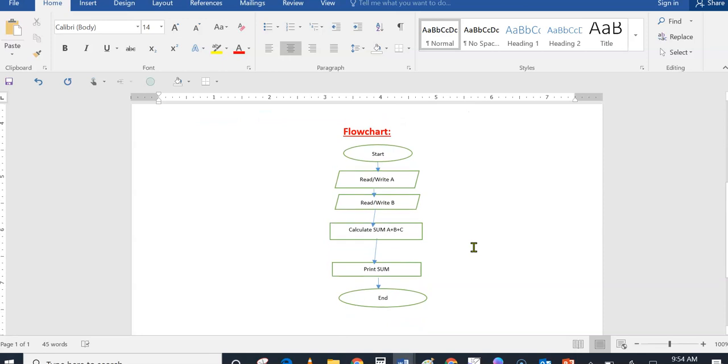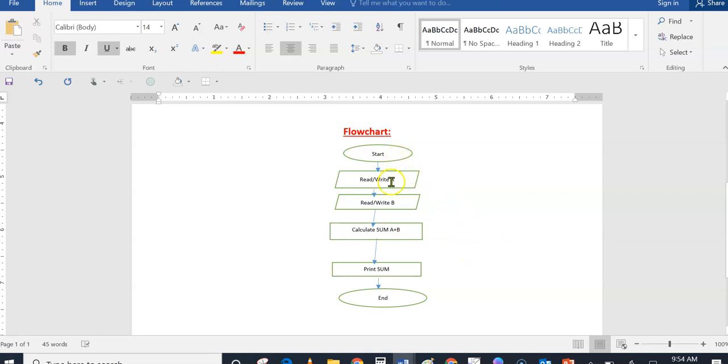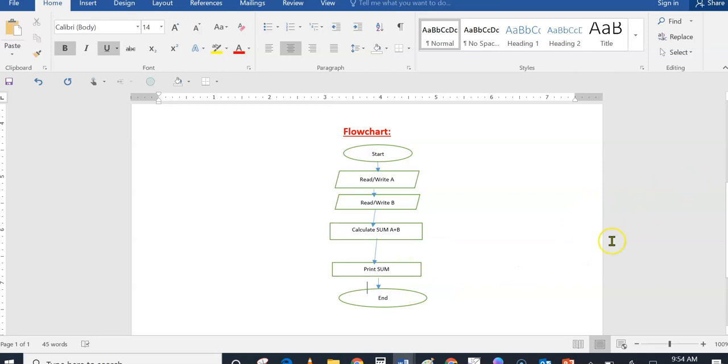I'm going to show you the flowchart for adding two equations. You can start, you can read and write addend one, then you write another addend, then you calculate the sum of A and B, then you print the sum. That is the solution to the problem, then you stop. So that's basically it.